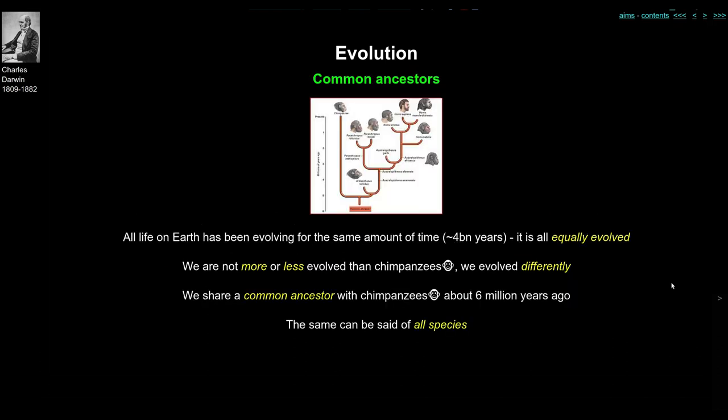Another important point often missed: all life on Earth has been evolving for the same amount of time — let's say four billion years — so it's all equally evolved. The worm is just as evolved as the chimpanzee. You shouldn't say we are more or less evolved than chimpanzees or any other animal. We evolved differently, with different selection pressures in different environments, different heritages, and different effects and causes along the way.